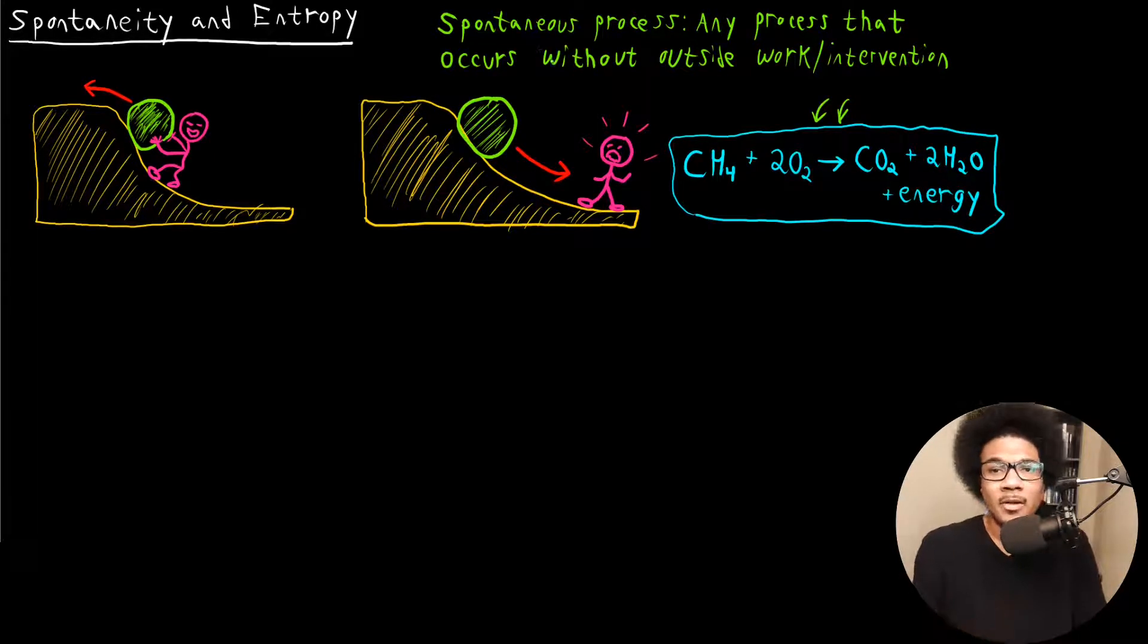So spontaneity is based on spontaneous processes. These are any processes that occur without any outside work or intervention. And I think the best way to kind of introduce this topic is just with some general physics processes that we would describe as either spontaneous or non-spontaneous.